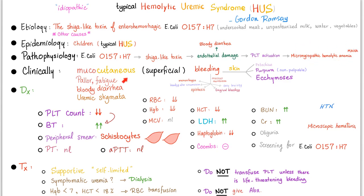Clinically, because platelets have been consumed, there can be mucocutaneous bleeding, pallor, and fatigue from hemolytic anemia, bloody diarrhea from EHEC, and uremic stigmata from acute renal failure. Diagnostic results: platelet count is low (thrombocytopenia), leading to prolonged bleeding time. Peripheral smear shows schistocytes. PT and PTT are normal because secondary hemostasis is fine. RBCs, hemoglobin, and hematocrit are low. MCV is normal — normocytic anemia. LDH is high, haptoglobin is low. Coombs is negative (non-immune). BUN and creatinine are high; oliguria, microscopic hematuria, and hypertension may occur. Screening for E. coli O157:H7 can help.